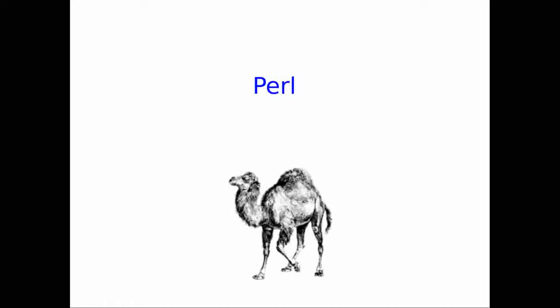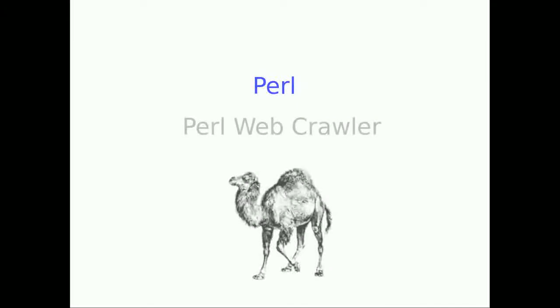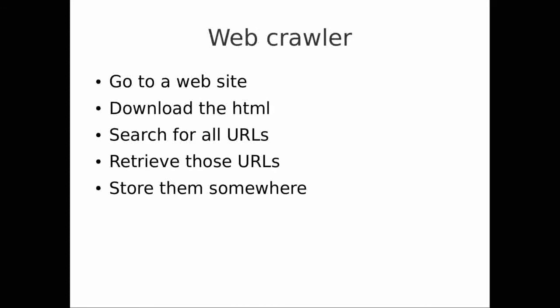In today's short class, we're going to take a look at some example Perl code and we're going to write a web crawler using Perl. This is going to be a very simple piece of code that goes to a website, downloads the raw HTML, iterates through that HTML to find the URLs, retrieves those URLs, and stores them as files. We're going to create a series of files, and in our initial iteration we're going to choose just about ten or so websites.